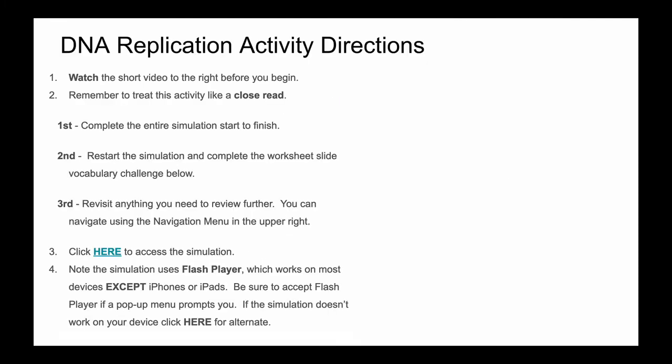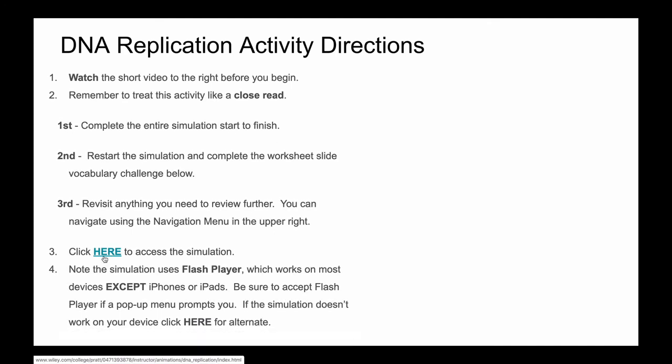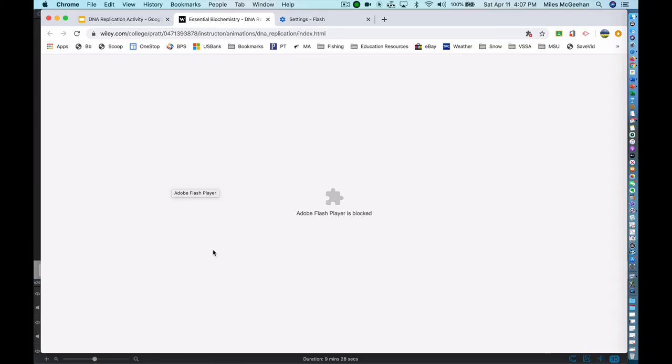Okay, so now that we have that background, we're going to get into the objective of this lesson, the DNA replication activity. Here are some brief directions to look over, and here's access to a simulation. When you click on this, now this site uses a program called Adobe Flash Player to run the simulation. Adobe Flash Player does not work on iPads or on iPhones, but it does work on Chromebooks and Macs, and it should work on PCs as well. However, if your browser doesn't have Adobe Flash enabled, you might need to change some settings. I'm currently in Chrome, and it says Adobe Flash Player is blocked.